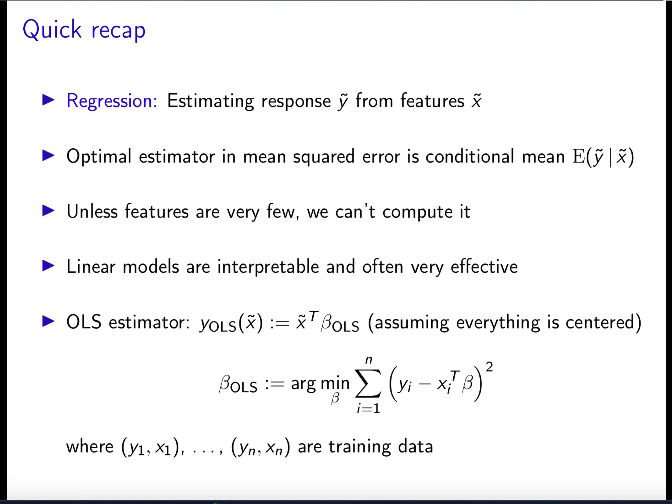We already introduced the ordinary least squares estimator, which is an estimator obtained by minimizing the square difference between the response and the linear model, summed over training data. These are training examples where we have an example of the response and the corresponding features — n examples in total. We're assuming everything is centered, which is why you don't see a constant in the linear model.